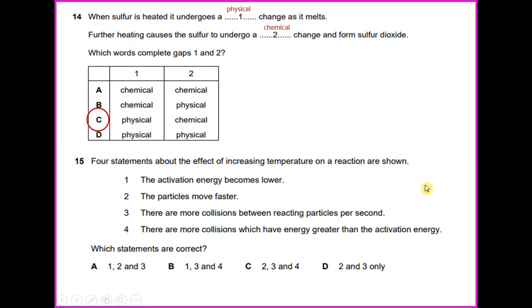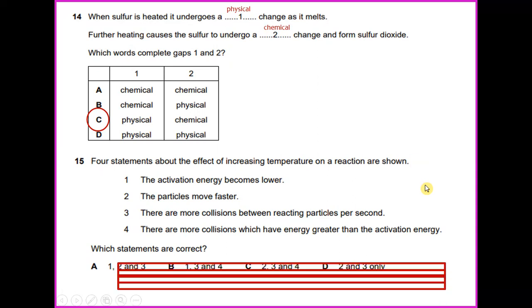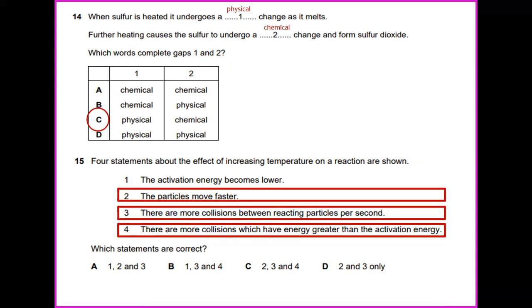Four statements about the effect of increasing temperature on a reaction are shown. In this case, the answer is 2, 3, and 4. The particles move faster, there are more collisions between the reacting particles per second, and there are more collisions which have energy greater than the activation energy. So the answer is C.